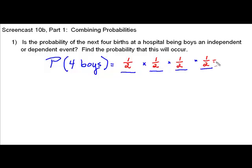To find the probability that all four will be boys, we need to multiply one half times one half times one half times one half, or one half raised to the fourth power. That gives us one sixteenth, or six and a quarter percent if we change that to a decimal and then move the decimal point over two places.